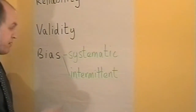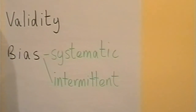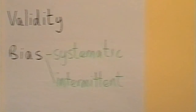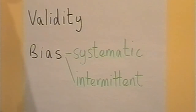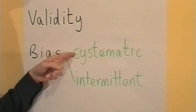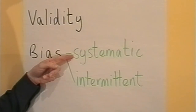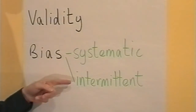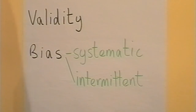The other type of bias is an intermittent bias. An intermittent bias will only show up from time to time, and therefore the results will only be distorted from time to time. So a systematic bias will be there all the time, while an intermittent bias will only be there some of the time. A systematic bias is likely to affect all of the results, whereas an intermittent bias is likely only to affect some of the results.